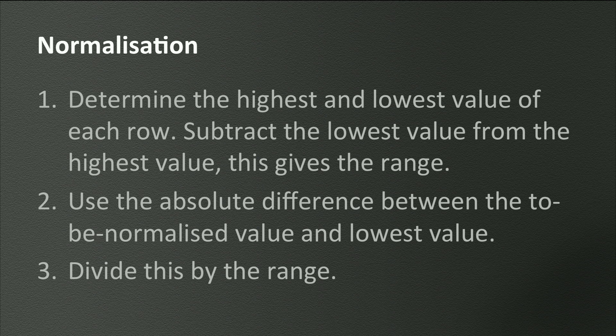Then, second, use the absolute difference between the to-be-normalized value and the lowest value for that criterion. So you take the score in the cell you want to normalize and you take the lowest score from that whole row, then calculate the absolute difference between them. The third step is to divide this number by the range you found in step 1. Now you have normalized your scores — they all should have a value between 0 and 1, with 0 being the worst and 1 being the best.